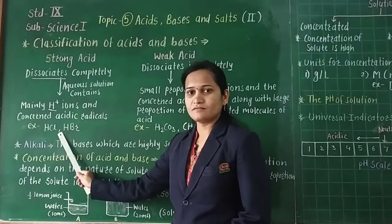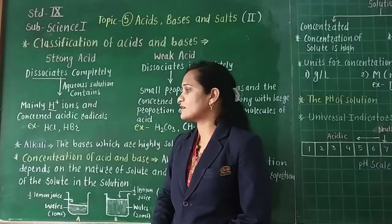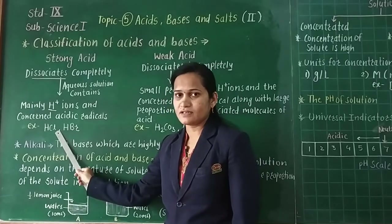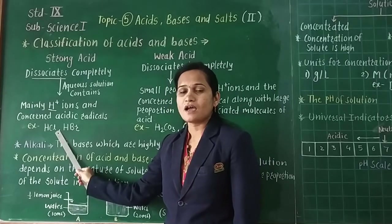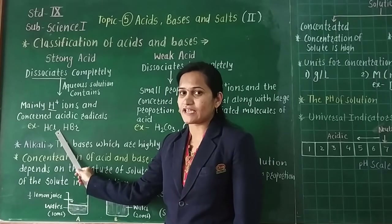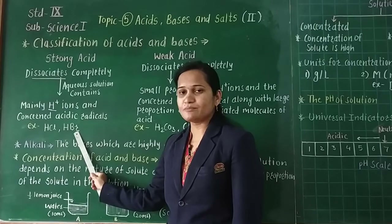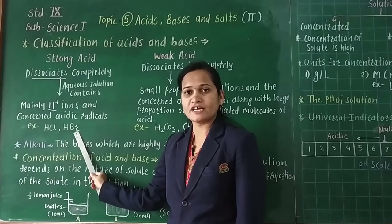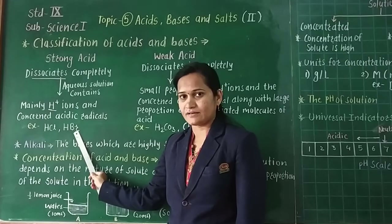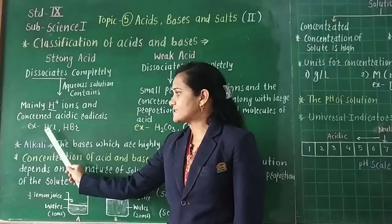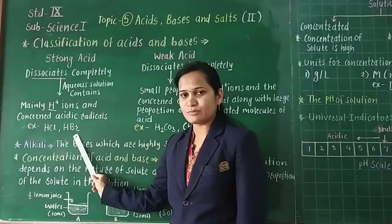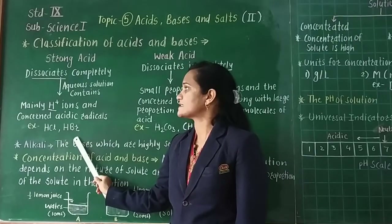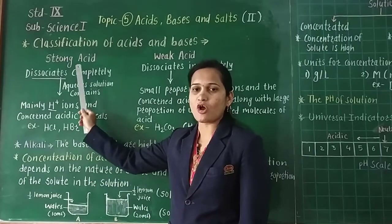See the examples. The first example is HCl — HCl means hydrochloric acid. And HBr means hydrogen bromide. HCl and HBr — these two are examples of strong acid.